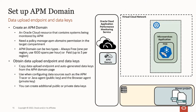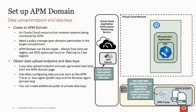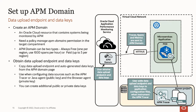Here is a sample flow to set up APM. In this example, a Helidon-based microservice application runs on Kubernetes and you want to monitor it using APM with the APM tracer as data source. First, obtain the data upload endpoint and data keys from the APM domain. Then go to the application's project directory, edit the configuration file such as the application YAML file, and add the data upload endpoint and data key copied from the APM domain. Then rebuild and redeploy the application. Soon the data source starts sending traces and spans to the APM domain using the provided data endpoint URL.